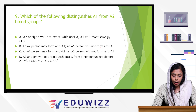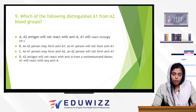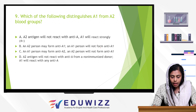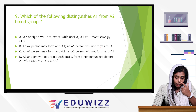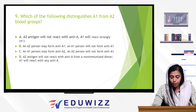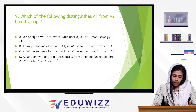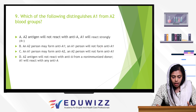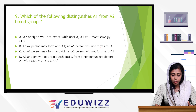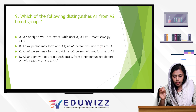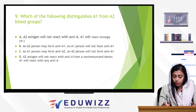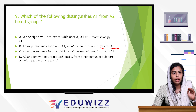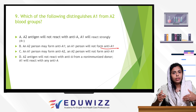Next question: which of the following distinguishes A1 from A2? An A2 person may form anti-A1, while an A1 person will not form anti-A1. A2 antigen will not react with anti-A1 from a non-immunized donor, but A1 will react with anti-A1. Correct: an A2 person will produce anti-A1, while an A1 person will not produce anti-A1.